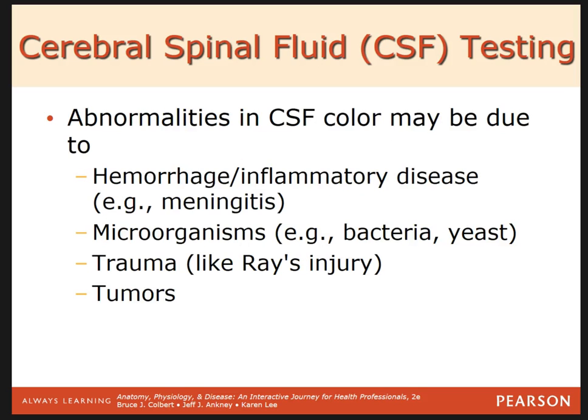Abnormalities in the cerebral spinal fluid — including color changes — could be due to hemorrhage or inflammation occurring during meningitis or an injury, trauma, microorganisms, and tumors.